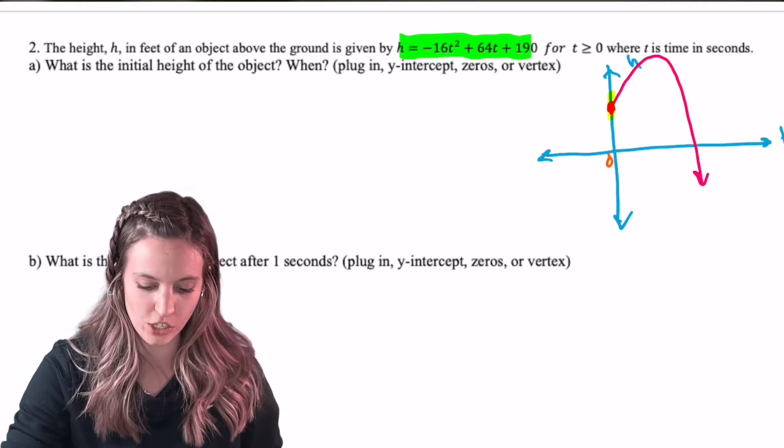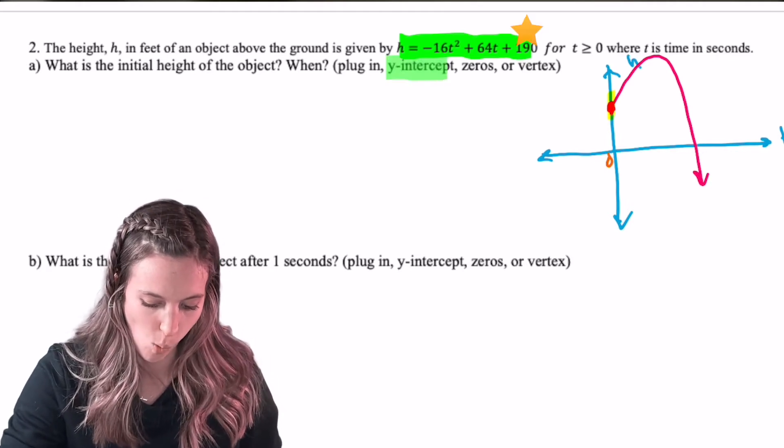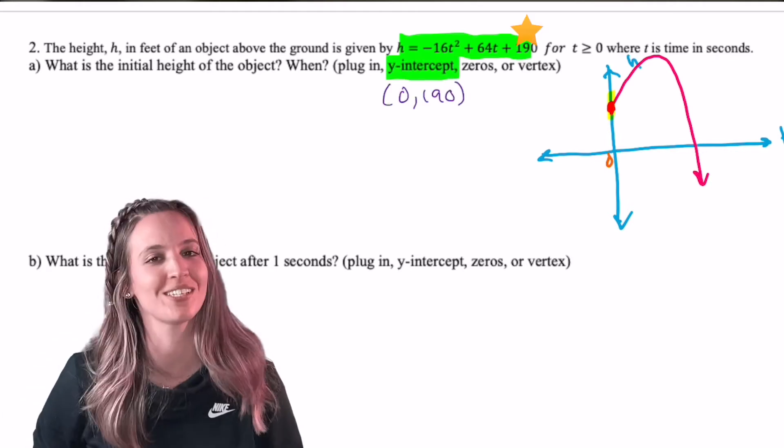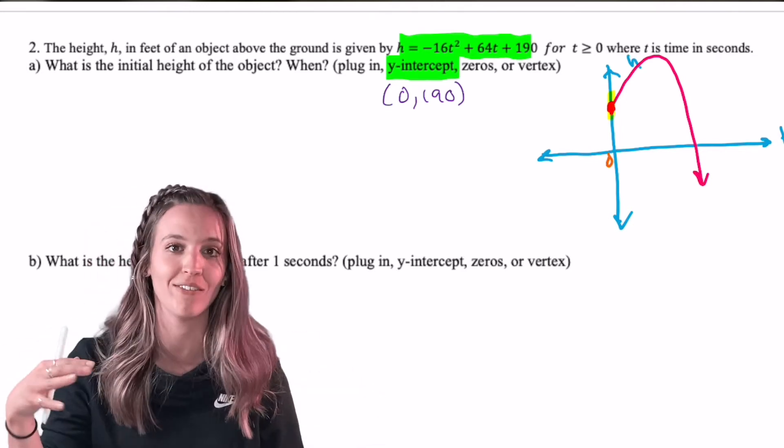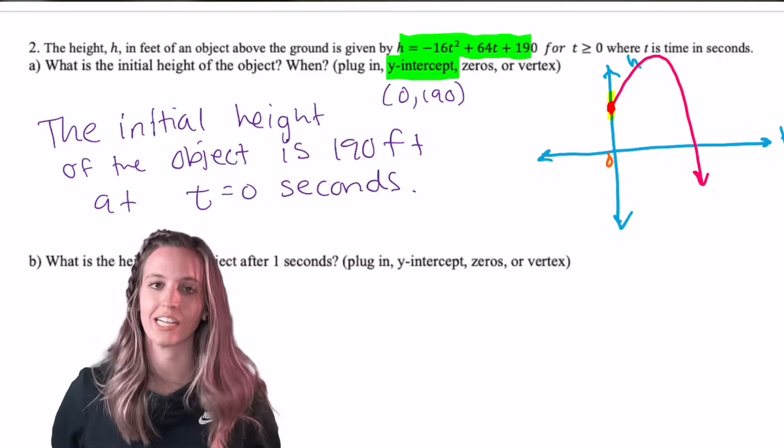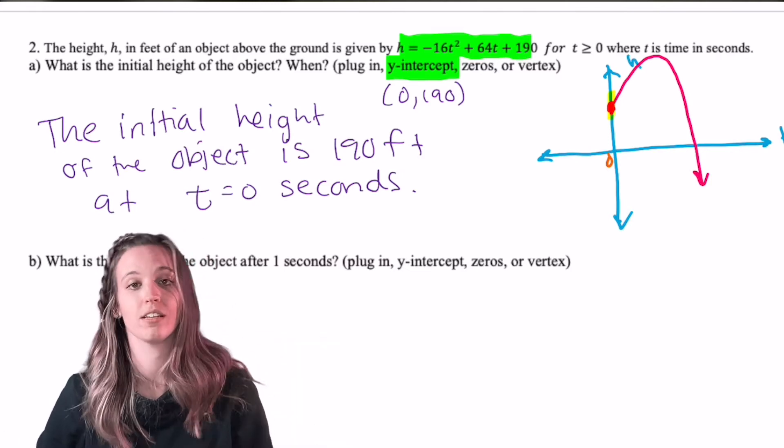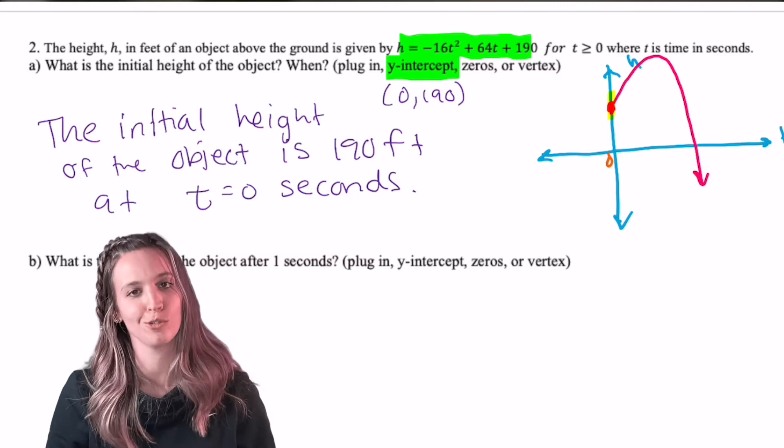The y-intercept, right? So I'm really just looking for the y-intercept here. Y-intercept is 0, 190. So the ball is 190 feet above the ground at zero seconds. So remember, answering in context, the initial height of the object is 190 feet at t equals zero seconds.